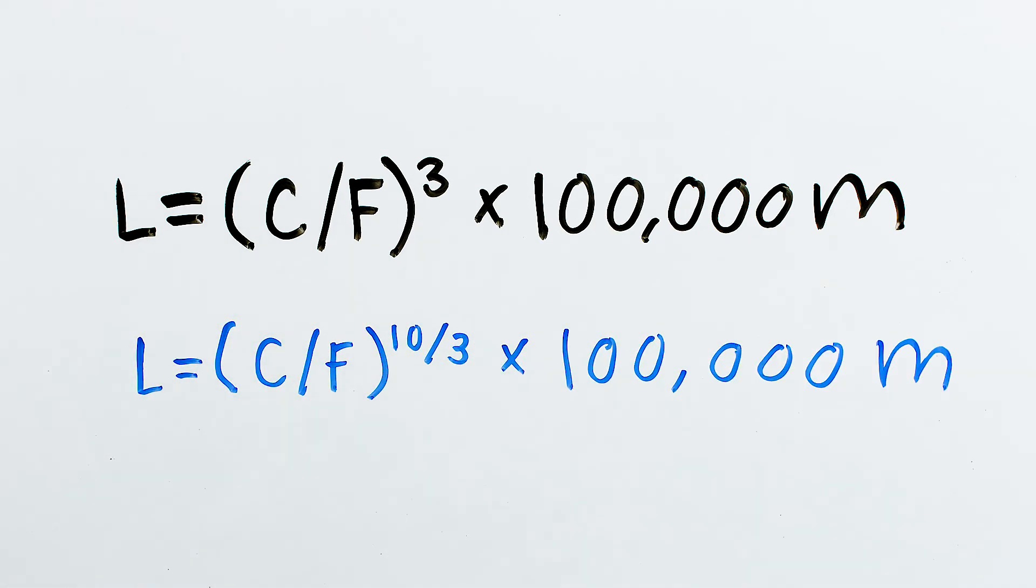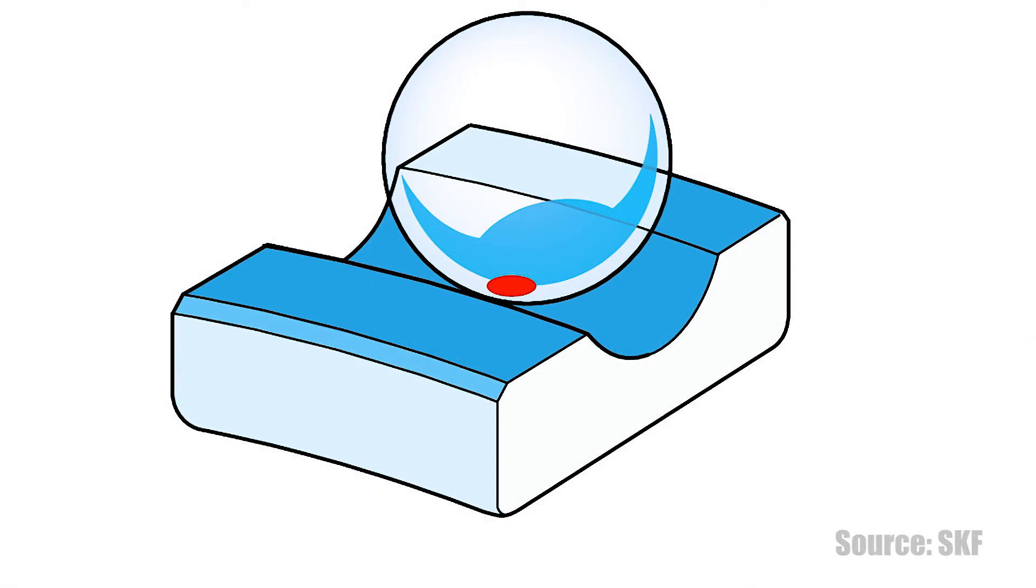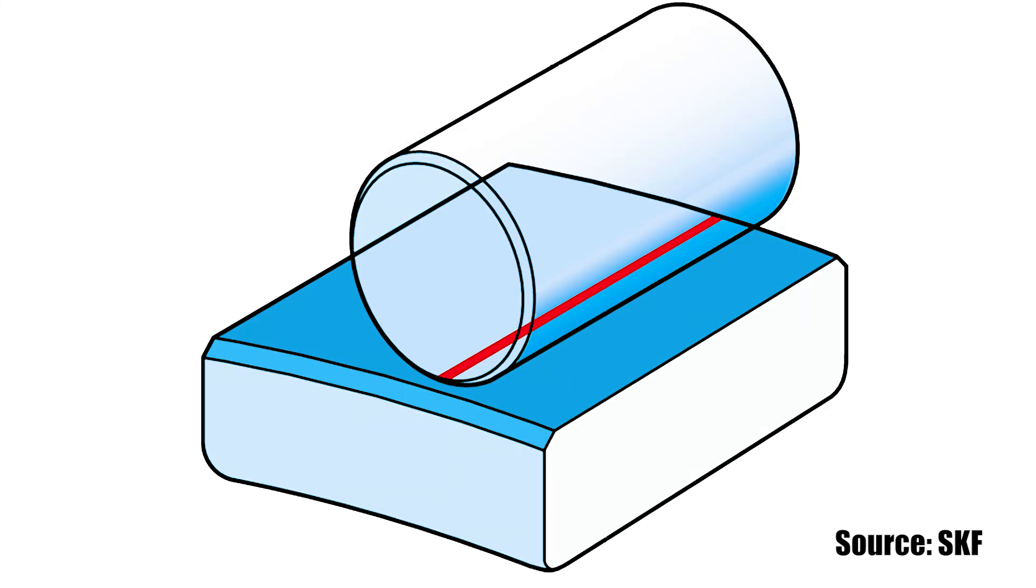But for recirculating roller bearings, the ratio of dynamic load capacity to applied load, C over F, is raised to the ten-thirds power. The difference between the ball bearing and roller bearing life equations is due to the type of contact the rolling elements make with the raceway. That is point contact for ball bearings versus line contact for roller bearings.